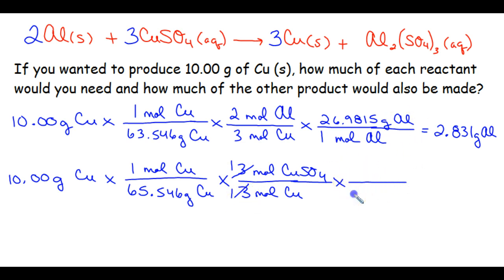And then 1 mole of copper 2 sulfate has a mass of 159.612 grams. For the sake of time, I looked all those up already. Alright, so if you plug that into your calculator correctly, hopefully you got 25.12 grams of copper 2 sulfate.